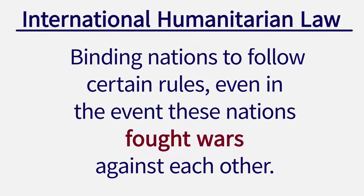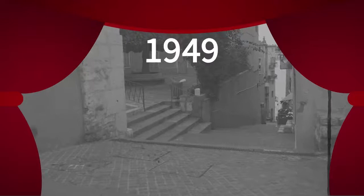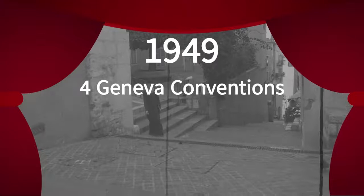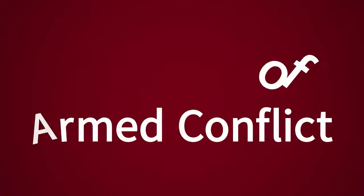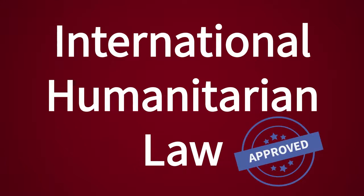After several more Geneva Conventions, in 1949 the nations agreed to the four Geneva Conventions that are in effect today. These four conventions, along with their three additional protocols, comprise a very detailed and specific set of rules for IHL. IHL was originally called the law of war and later the law of armed conflict. Eventually, the name of international humanitarian law was settled on as best reflecting the ideal behind the law — to inject humanity in war.